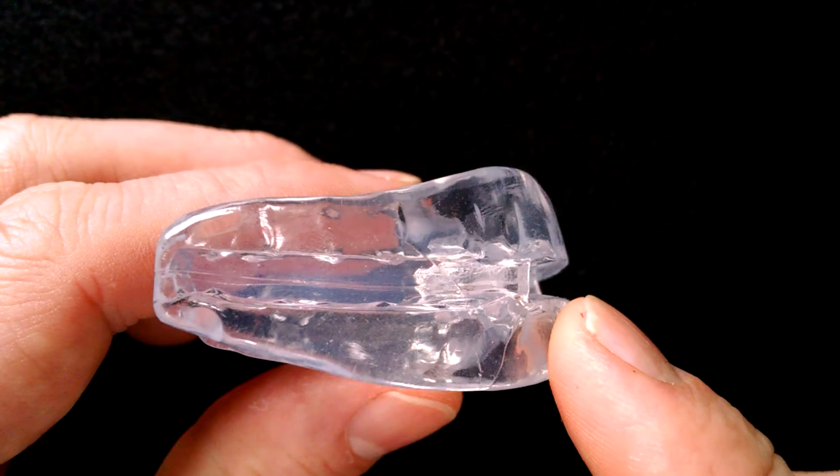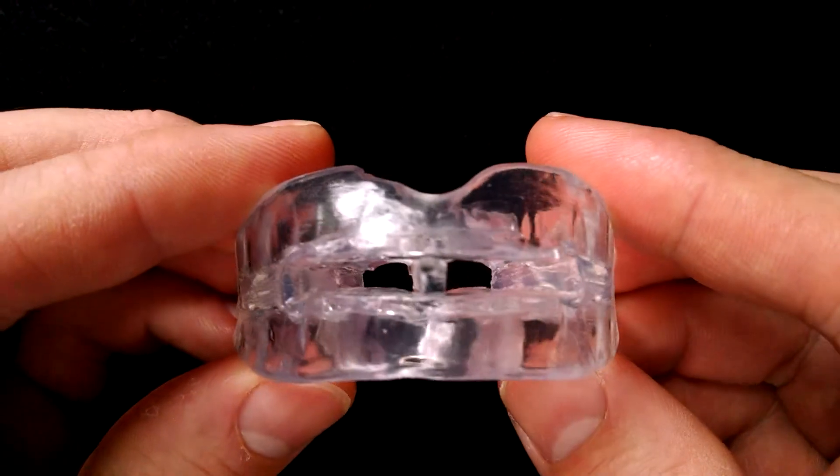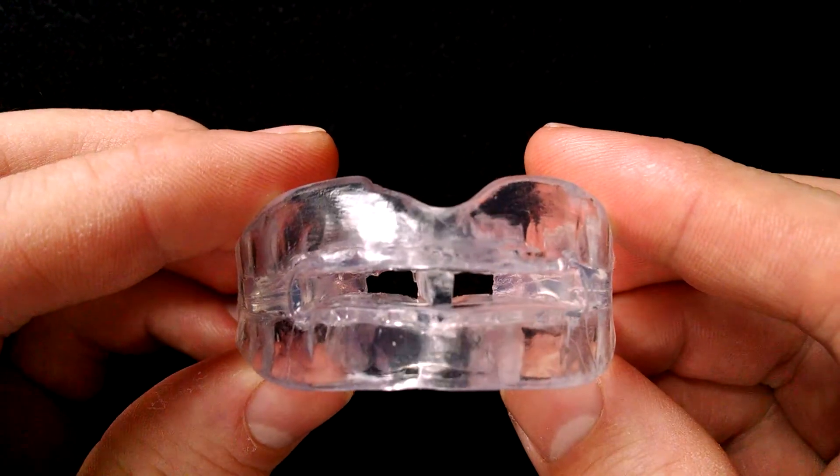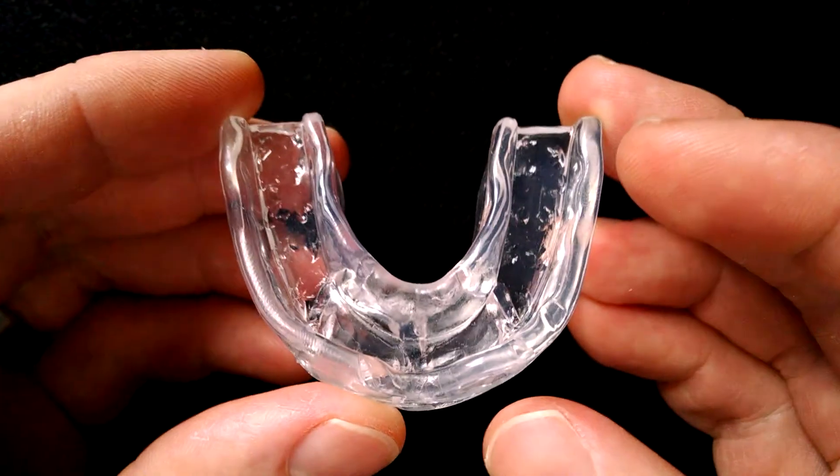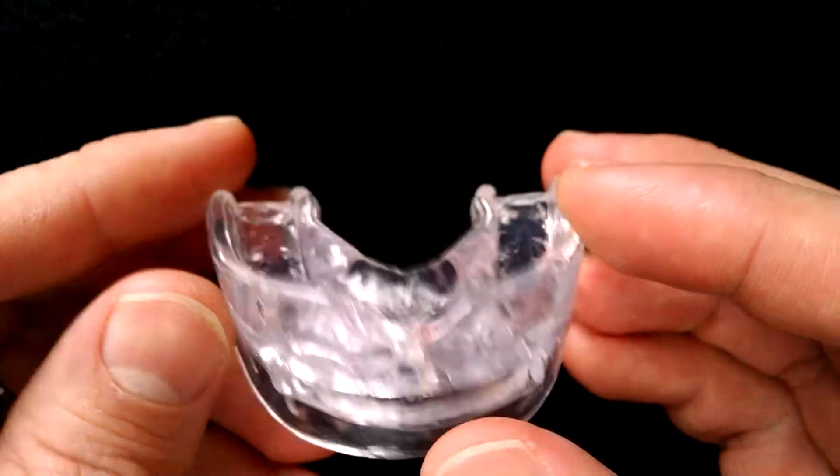So this is a simple boil and bite mandibular advancement device with a fairly large breather hole here at the front. This can be purchased from Rip Snore for about $70 and that includes shipping.